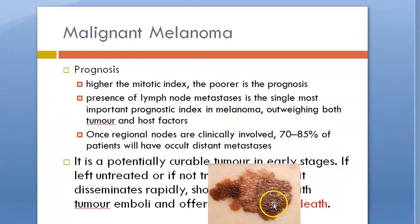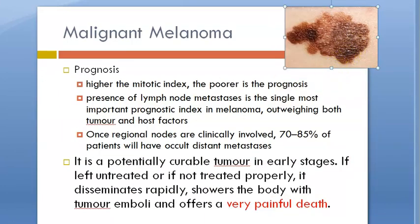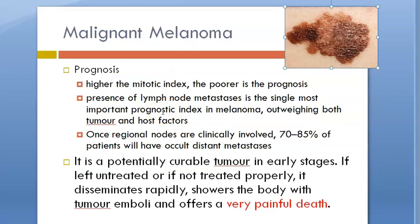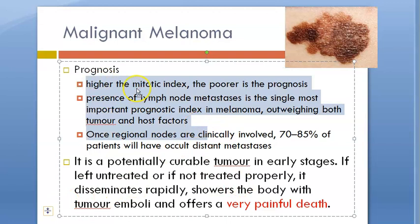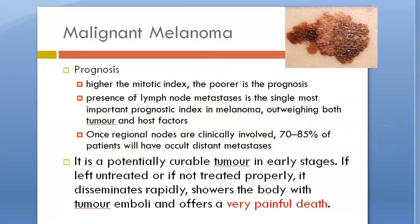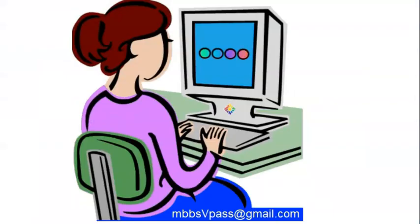What is the prognosis? Early treatment can lead to cure, otherwise painful death. Higher mitotic index means poor prognosis. Lymph node metastasis means poor prognosis. If regional lymph nodes are affected, there can be distant metastasis. That is what they say about malignant melanoma — it doesn't look good. Hope you are safe, guys. Bye bye.